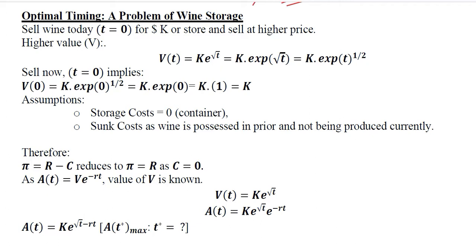In real life, we have some goods that if we sell them after a certain time period, their value will increase. For example, if we keep rice for a certain time period and it gets a little older, it will be sold at a higher price because it becomes more suitable for cooking. Similarly, wine is a drink that is more valuable if sold after a certain time period. We will solve this using exponential functions and their derivatives.